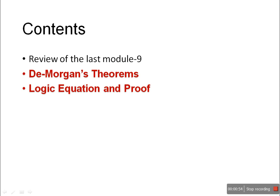Similarly, for multiplication, A dot B dot C is equal to A dot (B dot C) — it allows grouping. In the distributive law, a Boolean expression can be expanded by multiplying term by term, just the same as in ordinary algebra. For example, A dot (B plus C) equals A dot B plus A dot C. And in the OR equation, A plus (B dot C) is equal to (A plus B) dot (A plus C).